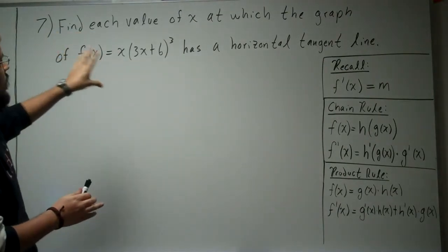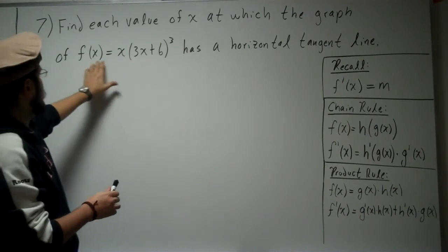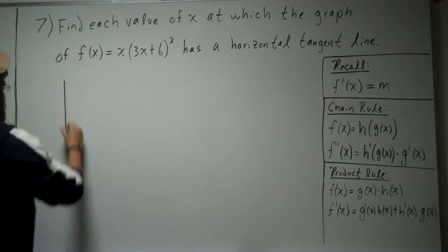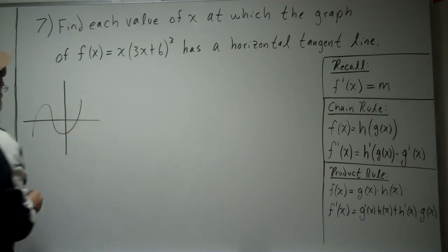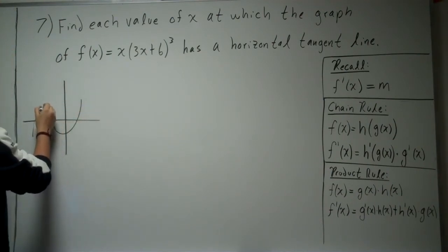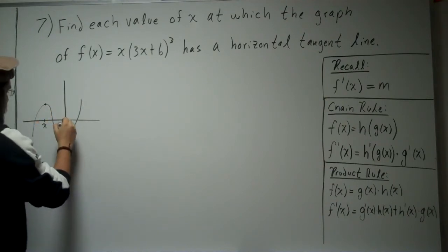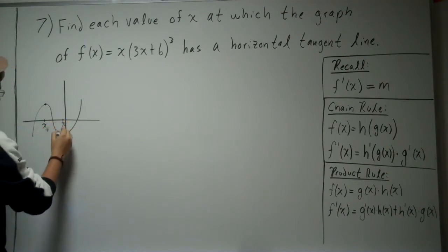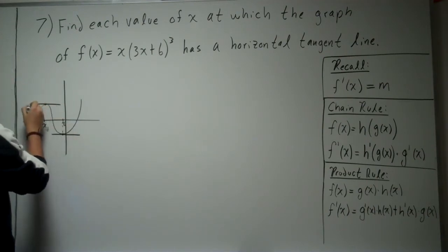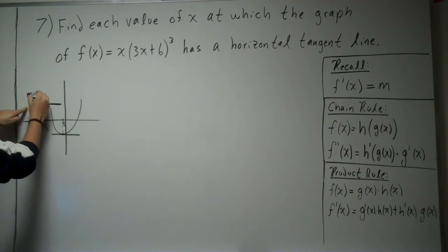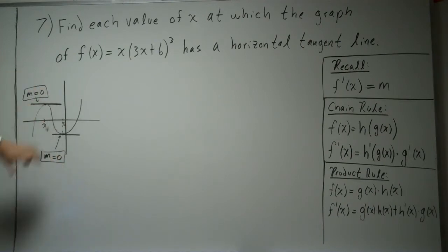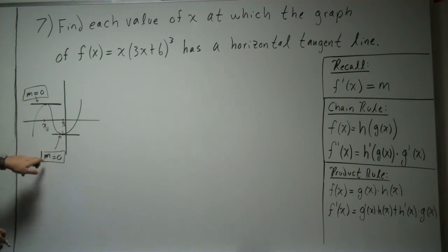So let's read this again. We need to find all x at which the graph of this function has a horizontal tangent line. Let's say we had some graph here. The horizontal tangent line — what does that mean? That means we need to find these x values, let's call them x0 and x1, such that we have this horizontal tangent line. The horizontal tangent line means that the slopes at those points are equal to 0.